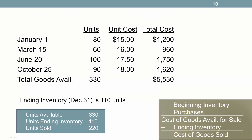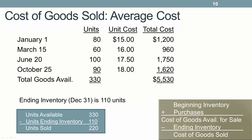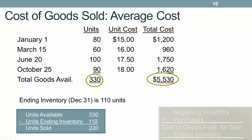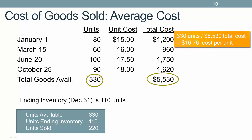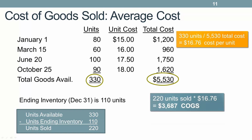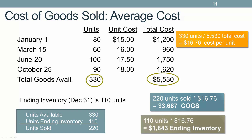For average cost, we calculate the weighted average cost of our inventory purchases by taking our total cost of goods available for sale divided by our total units available for sale, giving us a per unit cost of $16.76. We then multiply that per unit cost times the 220 units sold to determine that cost of goods sold is $3,687. Our 110 units in ending inventory times the average cost gives ending inventory a value of $1,843.